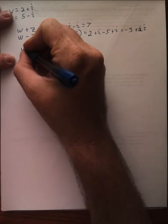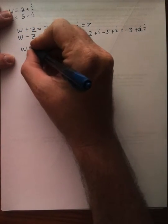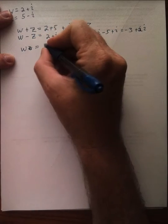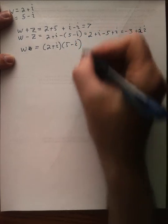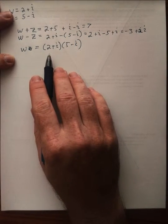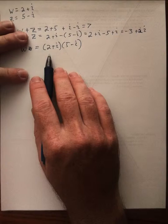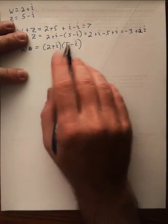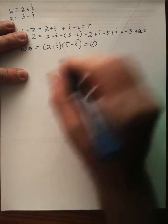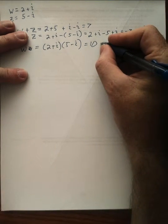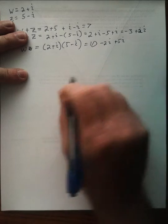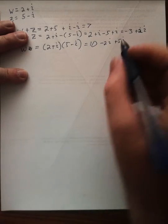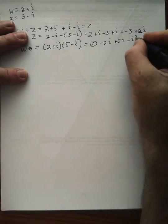Multiplying is a little more complicated. W times Z is 2 plus i times 5 minus i. And here we're going to use the distributive property, but we're going to do the shortcut using FOIL. So we'll do 2 times 7 is 10, 2 times negative 1 is minus 2i, 5 times positive 1i is plus 5i, and then i times negative i is minus i squared.